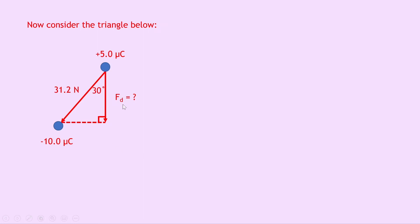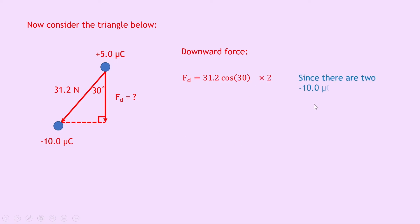The adjacent side is what we're trying to find, and the hypotenuse is 31.2 newtons. So we use cos 30 equals Fd over 31.2, which rearranges to Fd equals 31.2 cos 30. Because this is only due to one minus 10 microcoulomb charge, we multiply this answer by two since there are two identical minus 10 microcoulomb charges with the same effect. Putting this into your calculator gives 27.0 for one charge, and multiplying by two gives a final answer of 54 newtons.